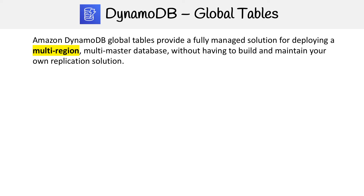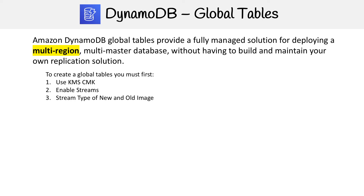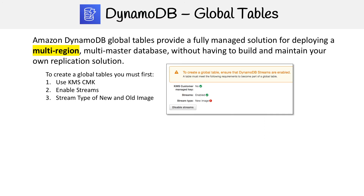In order to use global tables, there are three things you must meet. You need to use a KMS CMK — a custom master key with KMS. You need to enable streams, and the stream type has to be set to new and old image. Once you have those three checkboxes checked, as shown on the right-hand side, you are good to go.